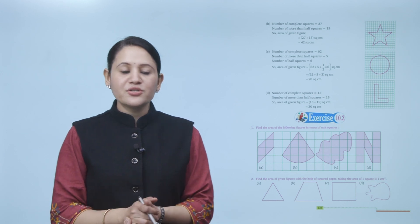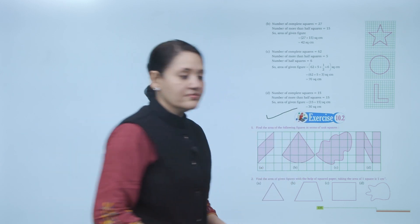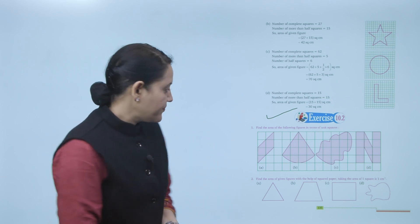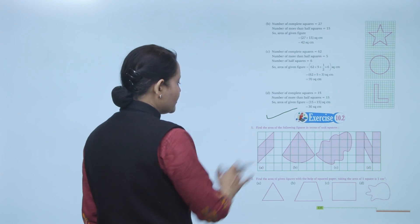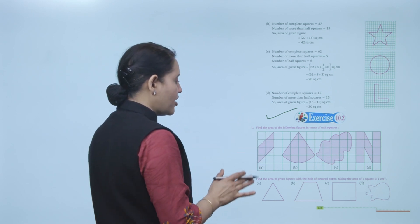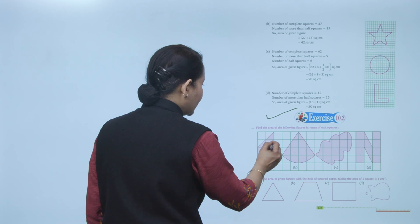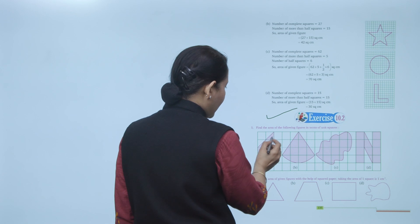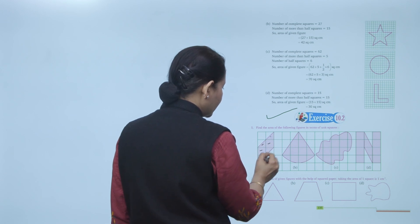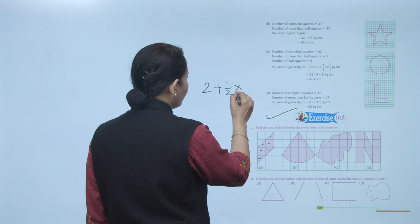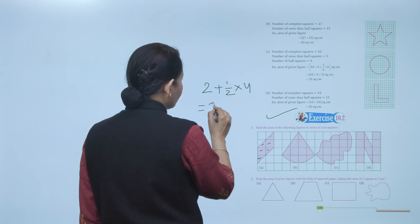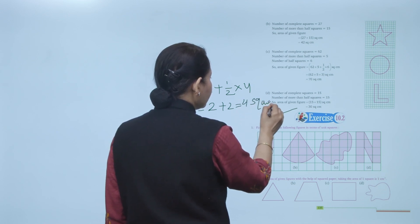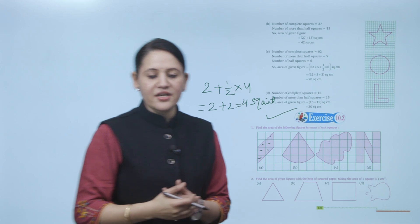Next is Exercise 10.2. Find the area of the following figure in terms of unit squares. For the first figure, we count the complete squares: 1 and 2. Then half squares: 1, 2, 3, and 4. So area equals 2 plus one-half times 4, which gives 2 plus 2, equals 4 square units. That is the area of the given figure.